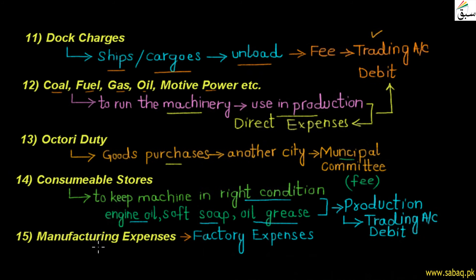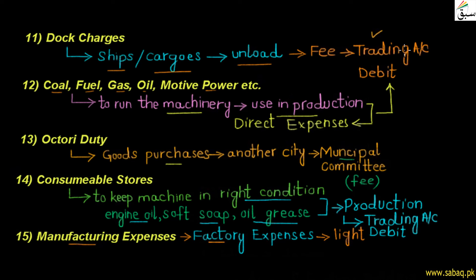Then we have manufacturing expenses. We manufacture things in our factory, and there are expenses related to that manufacturing process. For example, the light used in the factory, or if we are paying rent for the factory — these can all be manufacturing expenses. Since we are manufacturing things in the factory, these are our direct expenses, which will come to the debit side of the trading account.